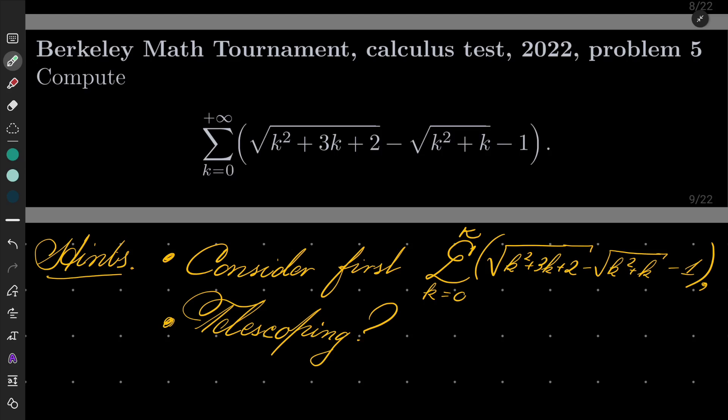We wish to compute the following series from k equals 0 to infinity of square root of k squared plus 3k plus 2 minus square root of k squared plus k minus 1.